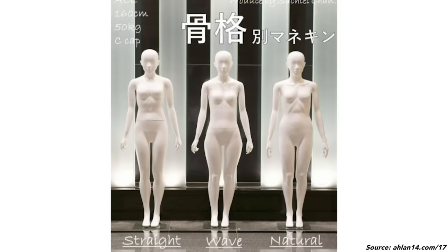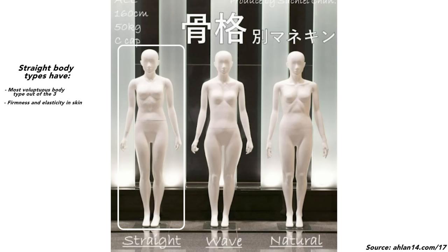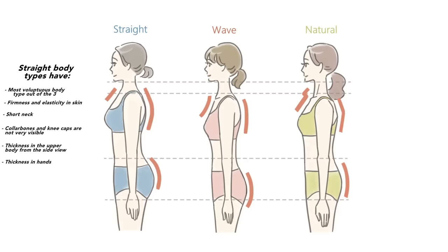Once you've answered all the questions, tally them up to see which of A, B, and C you answered the most. If you have the most A's, your body type is straight. Straight types have the most voluptuous body out of the three types. Firmness and elasticity in the skin and flesh is very obvious, and they have a relatively short neck with collarbones or kneecaps not being very visible. They have some thickness from the side view, and they have both a high bust and high hips, so the torso is on the shorter side — hence the voluptuousness, even from the side view.